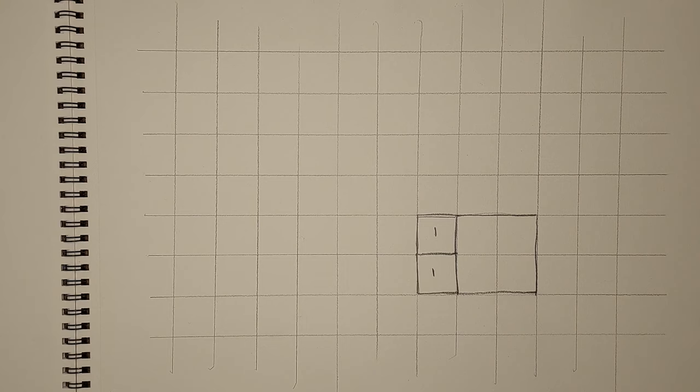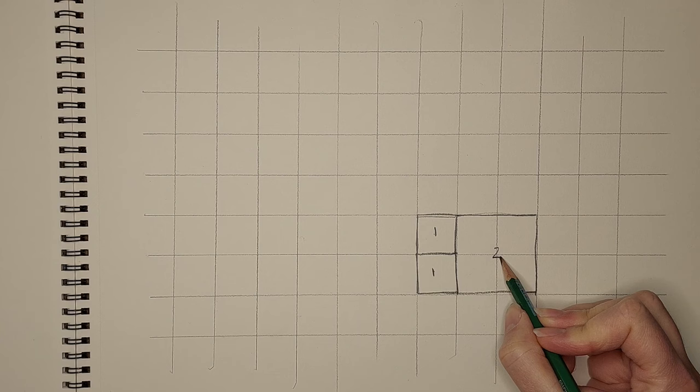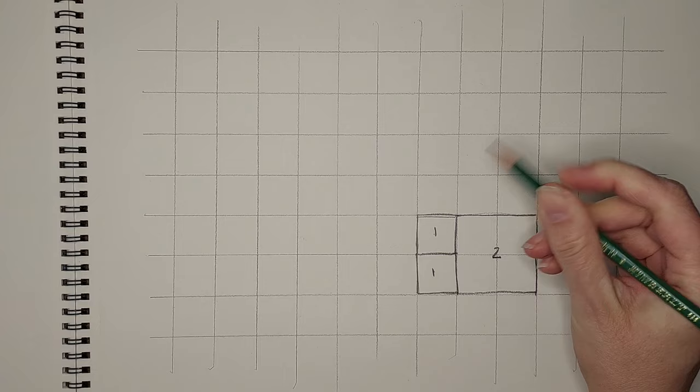So we want to do one plus one is a square of two by two. Now since we went this way and we're going out the next one's going to be up here.